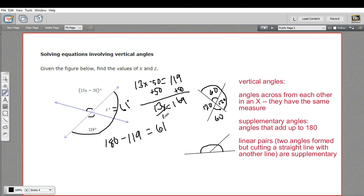And then to finish solving for x, I need to divide by 13 because that's what's multiplied by x there. I've got to do that to both sides. 169 divided by 13 is 13. So x is 13.